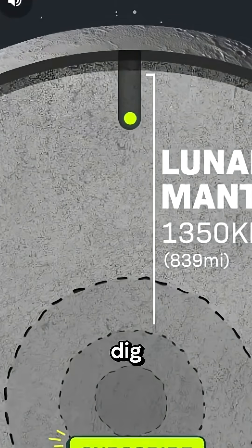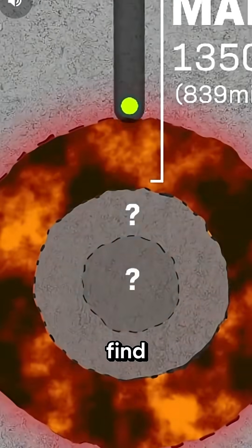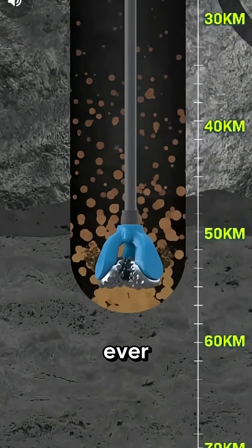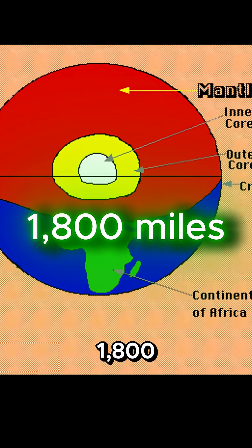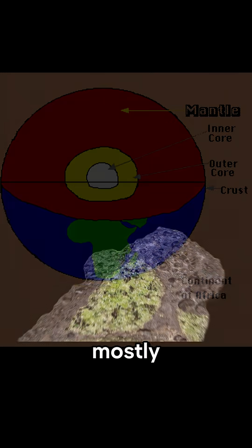If you could dig straight down, here's what you'd find: the deepest humans have ever drilled is 7.5 miles, which didn't even scratch the surface. Below that crust is 1,800 miles of mantle—mostly solid rock so hot it could melt steel in seconds.